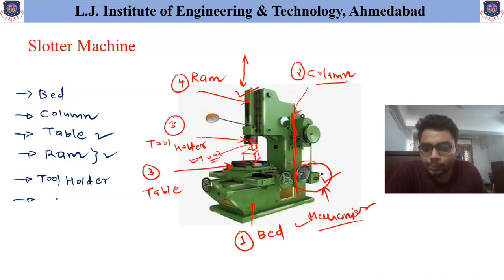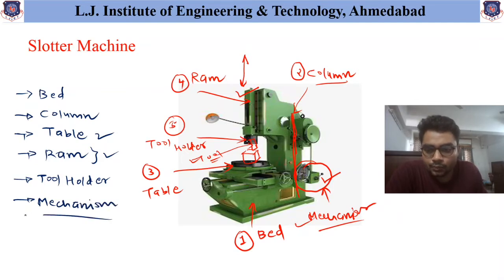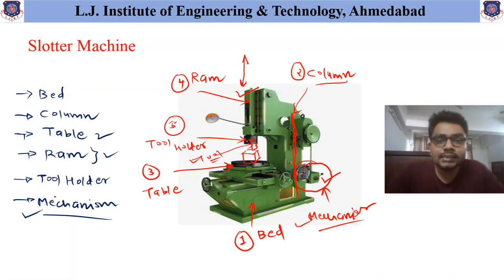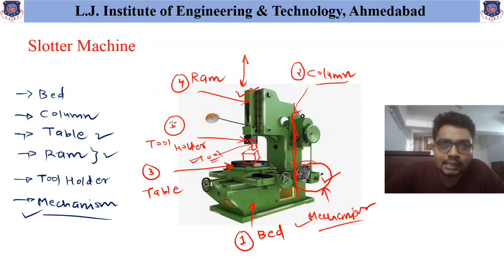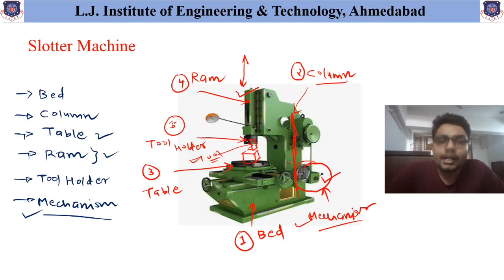The last common part is the mechanism — specifically, which type of mechanism is used to obtain the reciprocating movement of the table or the workpiece. We have discussed in our previous lecture that it may be of crank type, crank and pulley type, hydraulic type, or geared type. Different mechanisms can be used based on the requirement.